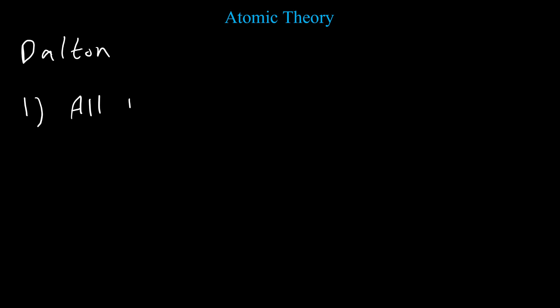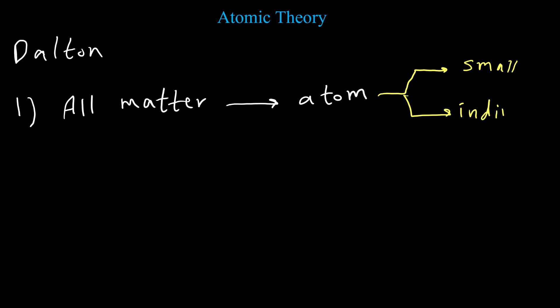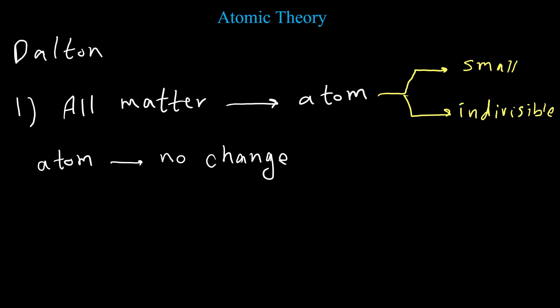The first postulate says all matter is composed of atoms — all matter has atoms. It says also that the atom is very small and also the atom is indivisible. Also, these atoms never change during a chemical reaction, so there is no change when we have a chemical reaction. This is the first postulate for the Dalton atomic model.